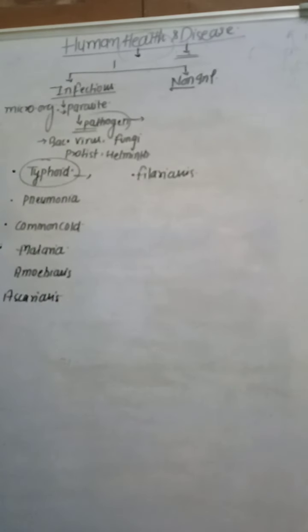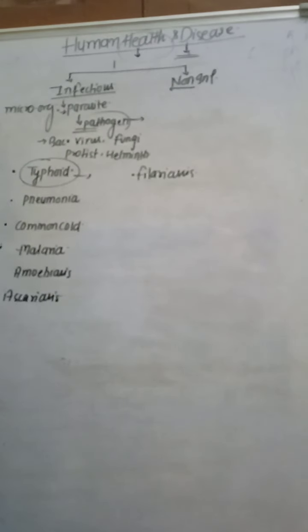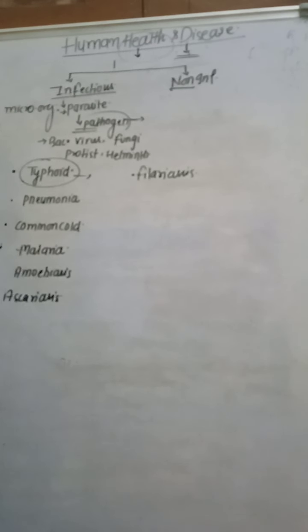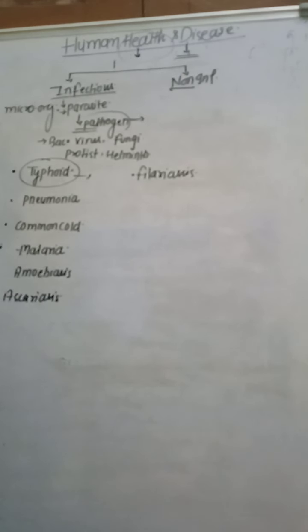The first disease is typhoid fever, caused by the bacteria Salmonella typhi. It causes infection through the blood, reaching the small intestine and causing infection. Symptoms of typhoid fever include headache, constipation, and sustained high fever of 39 to 40 degrees. To diagnose typhoid, the Widal test is used.